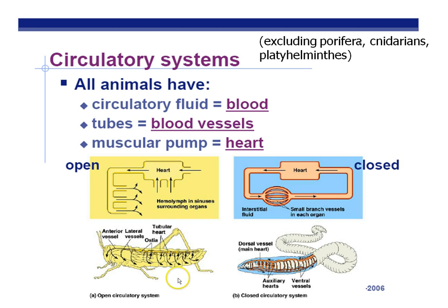Bugs have a different color blood — greenish-blue — because they use hemocyanin instead of hemoglobin as their oxygen-carrying molecule. The key point is that an open circulatory system is not as efficient as a closed one. Once blood carrying glucose and amino acids leaves the tubes, you have to rely on diffusion over long distances, which limits the size of bugs. It's one reason why bugs don't grow to the size of houses, and even prehistoric dragonflies were probably slow because of these limitations.